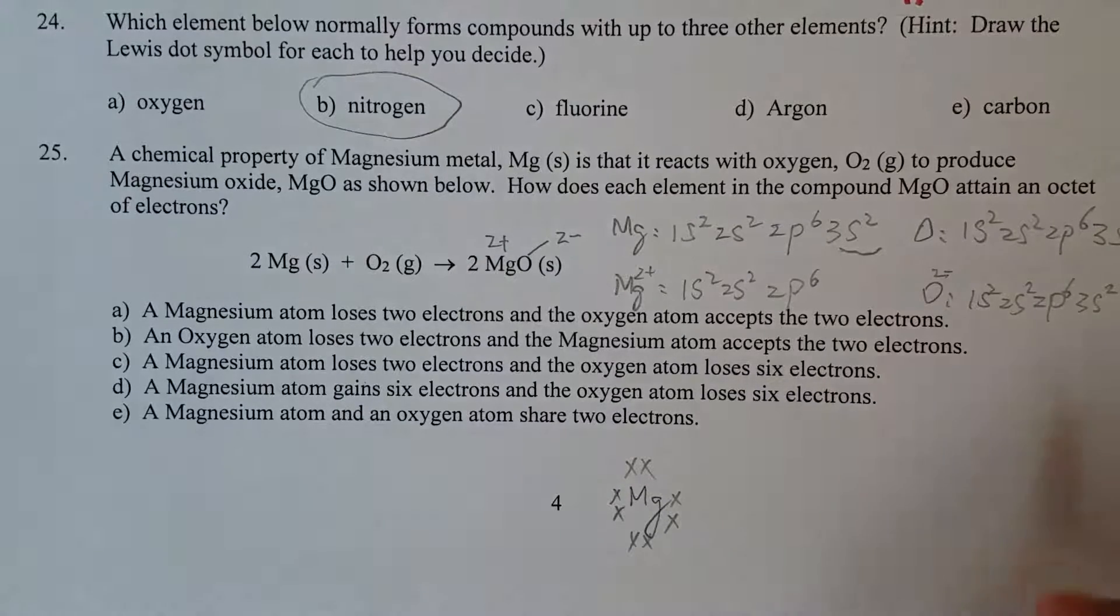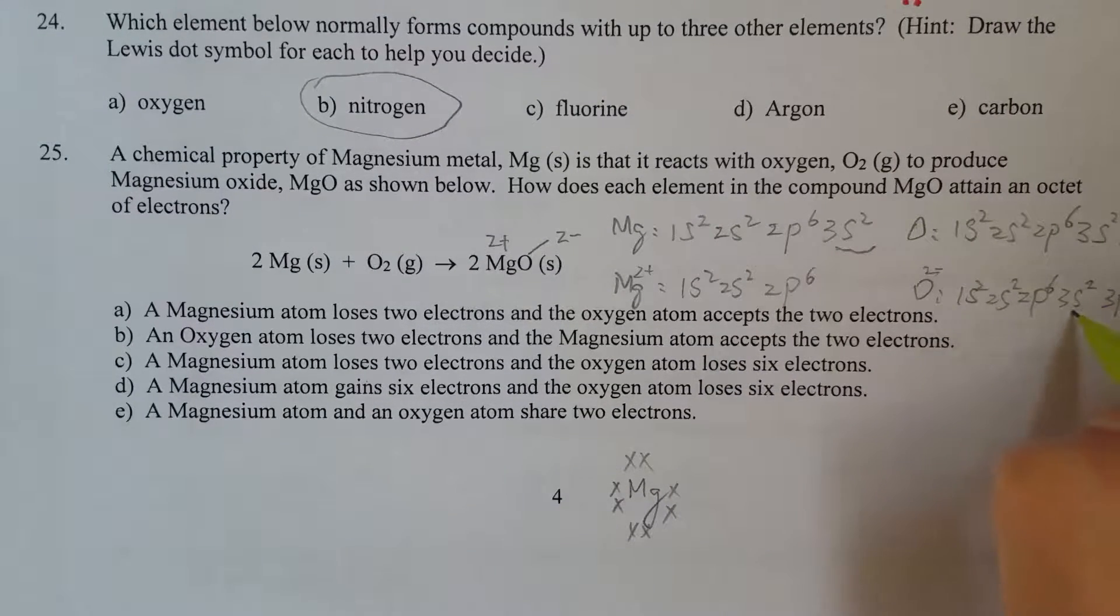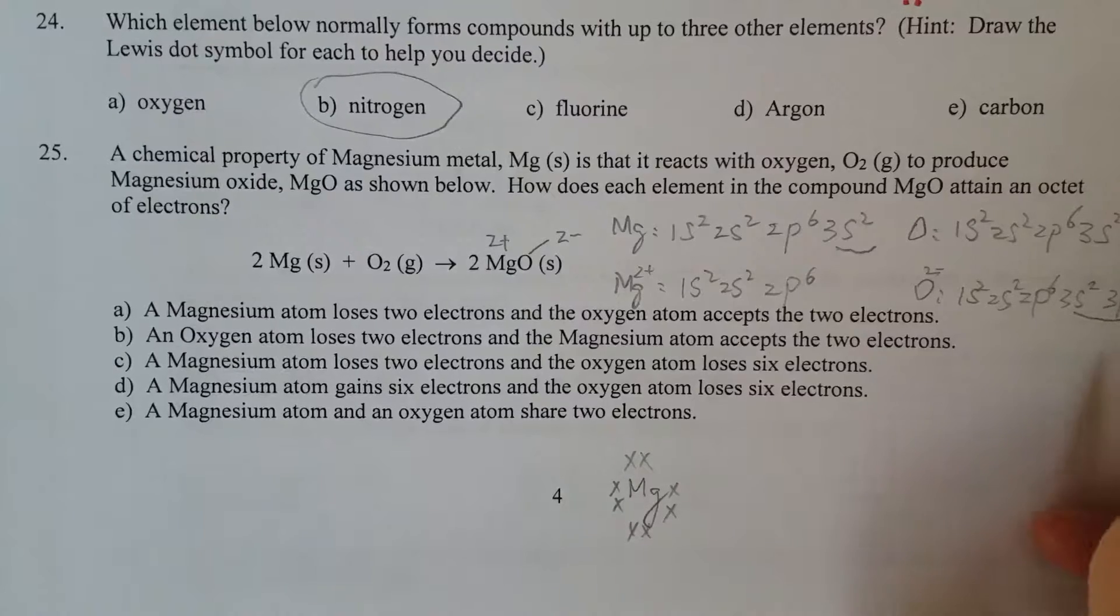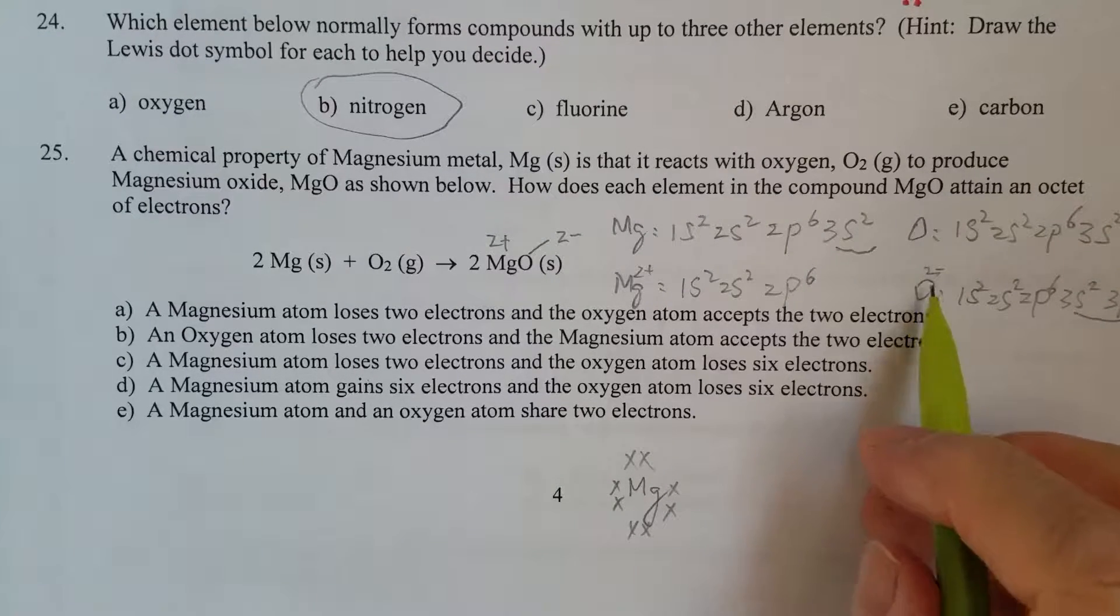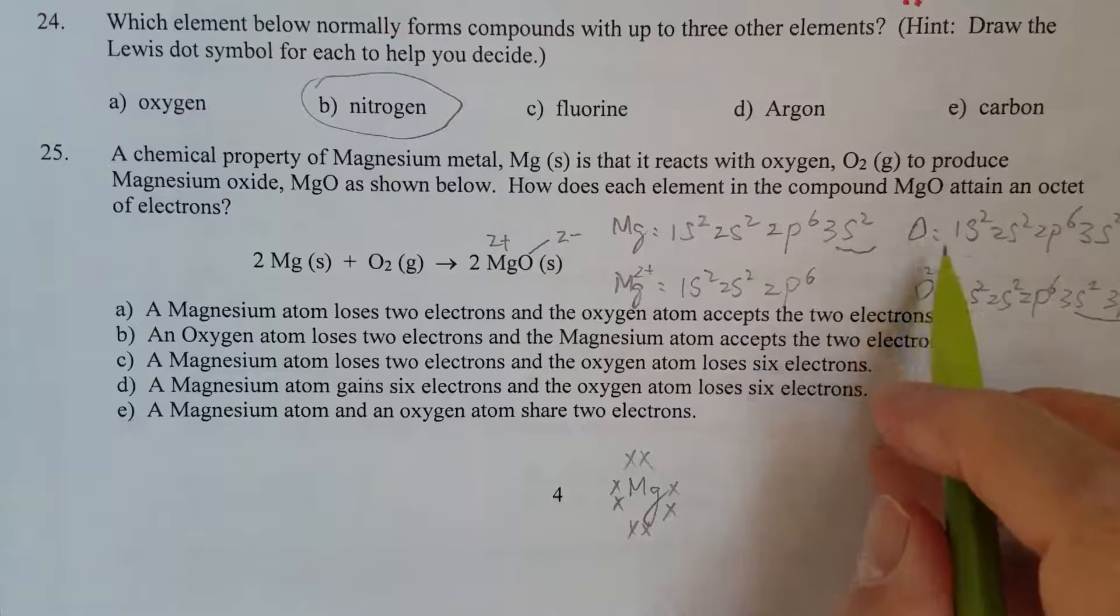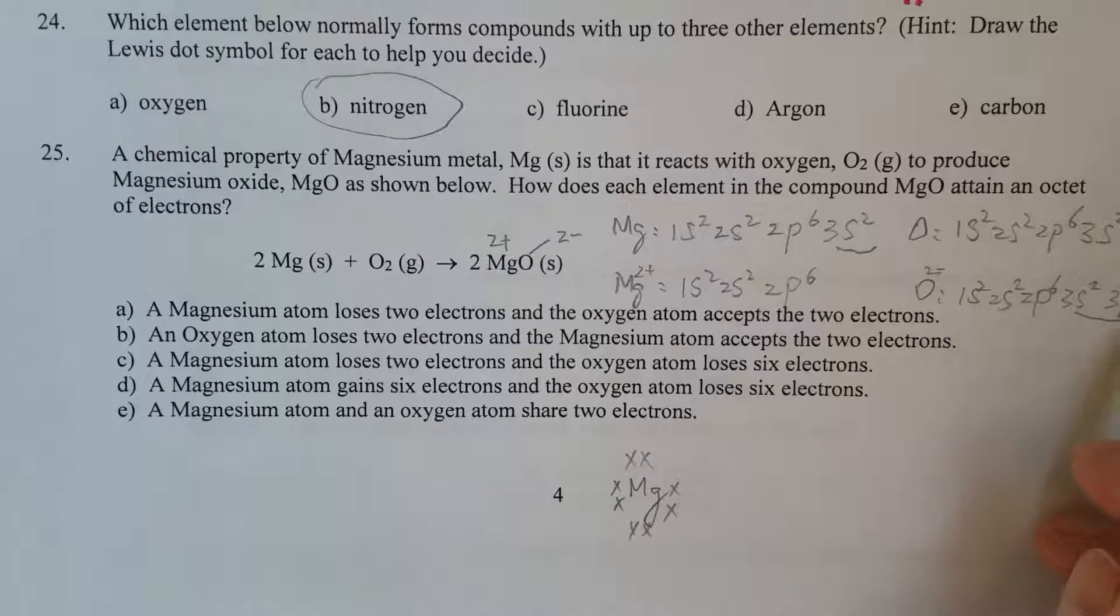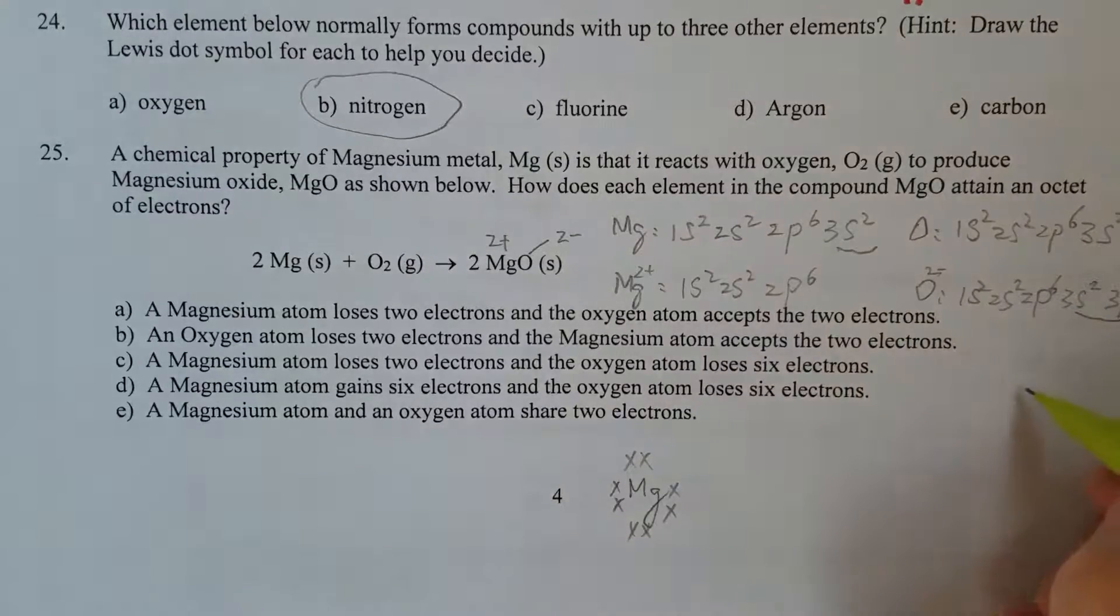So now you see the outermost, the number of electrons in the outermost shell, or the valence electrons for O2−, not O anymore, is 8. It's not 6 anymore.